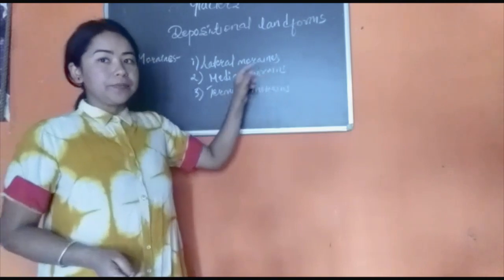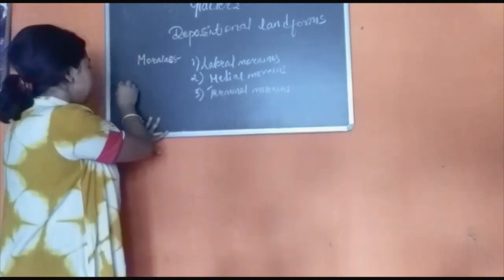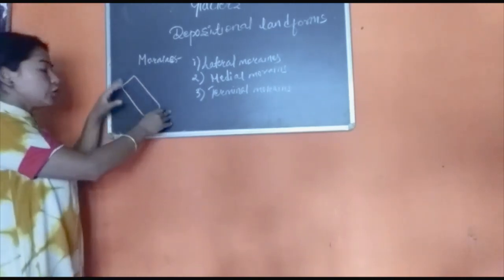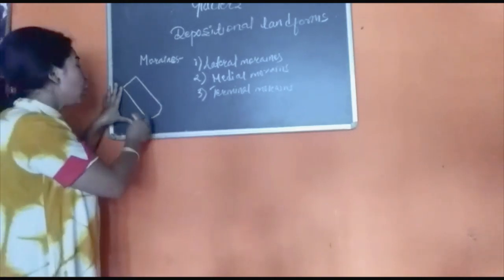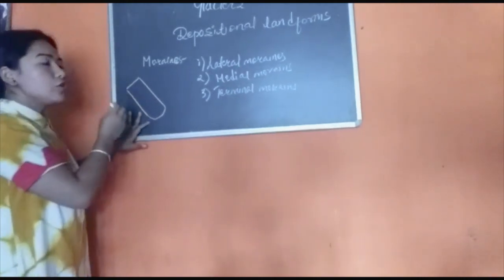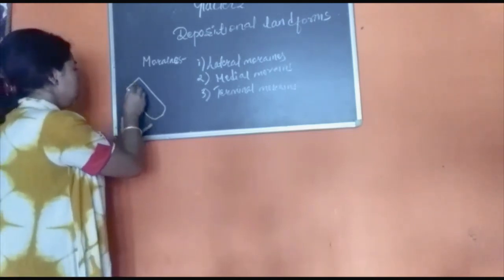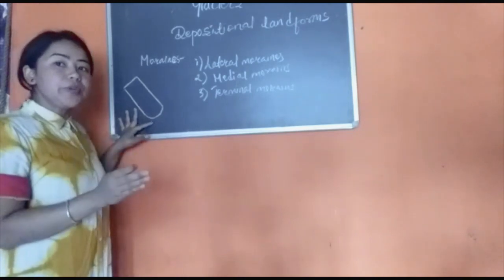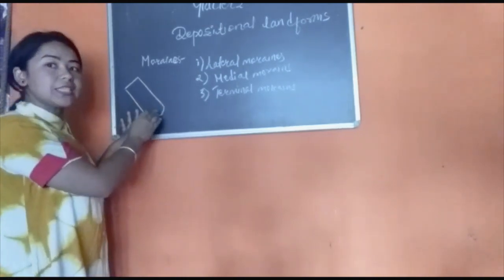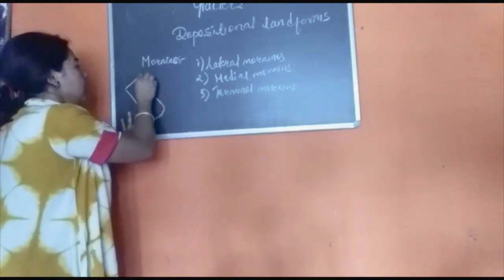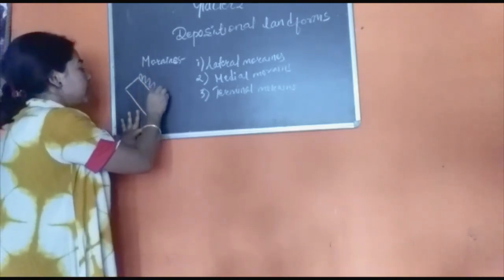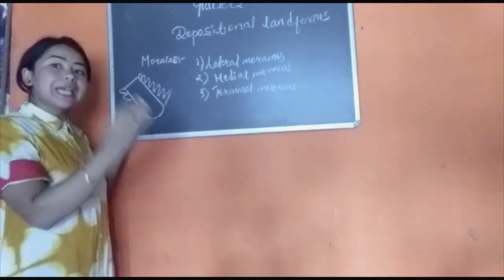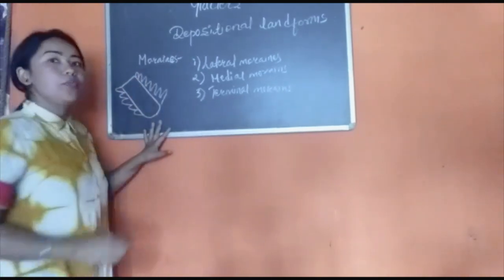So what are lateral moraines? Suppose this is a glacier moving on the valley; it is also bringing sediments along with it. When it reaches the snout or the terminal point, it starts depositing the sediments. Lateral moraines are the moraines which get deposited at the banks or the sides of the glacier. This is the lateral moraine.